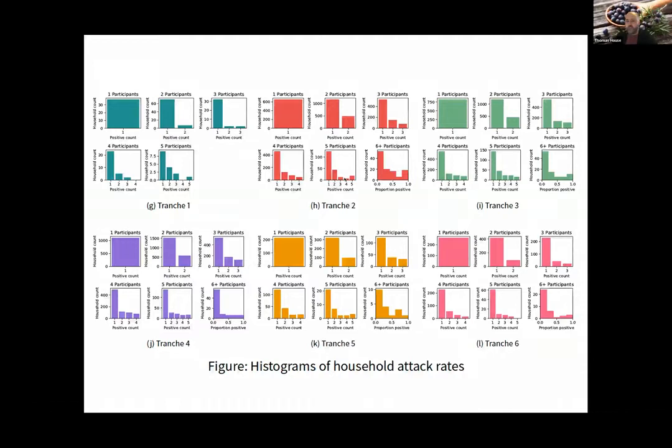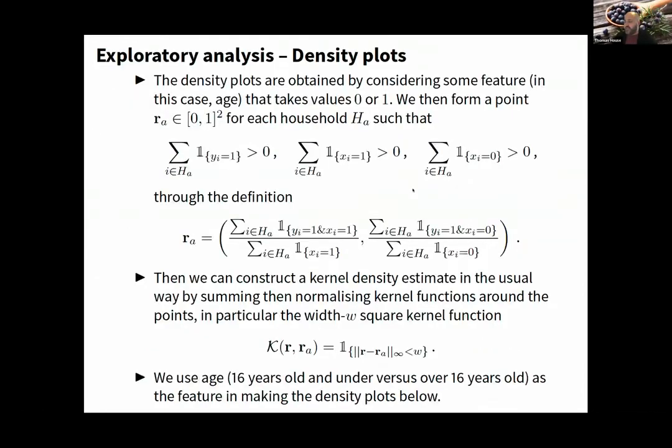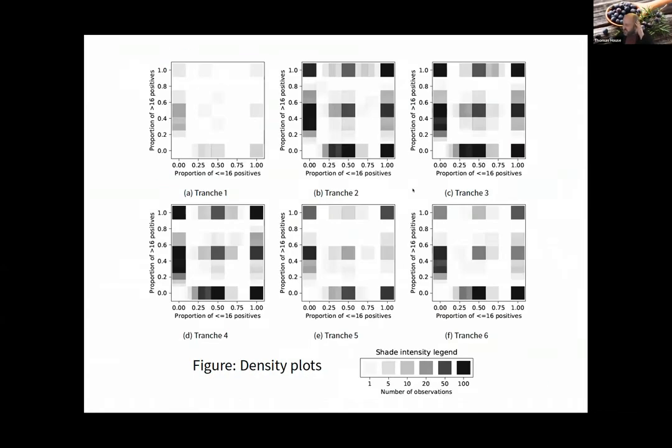You can identify how much is within the household and how much is between. We can do that in 2D with density plots. At each point in the proportion of child positives and adult positives, we put down a translucent marker. You see that bimodality even more strongly—it's not a centered distribution; a lot of weight is on the edges.